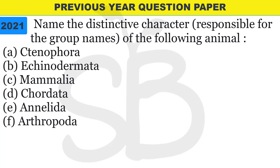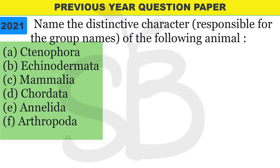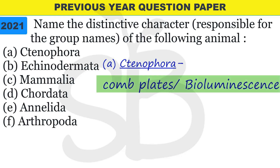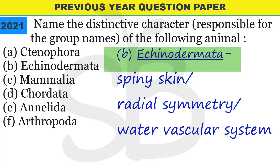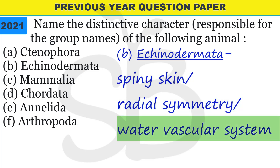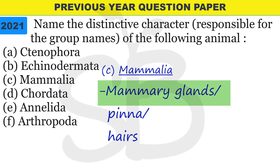Last question from the 2021 annual exam: name the distinctive character responsible for the group name of the following. Ctenophora - distinctive character is comb plates, and it shows bioluminescence (light emission). Echinodermata - echino means spines, derma means skin, so it is spiny skin; characters include radial symmetry and water vascular system. Mammalia - they have mammary glands, a pinna (external ear), and hair.